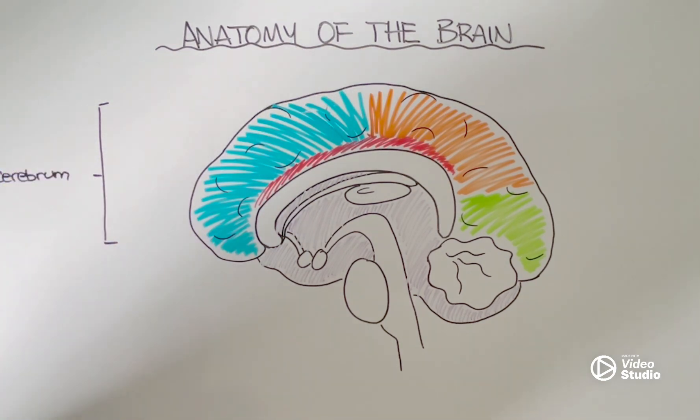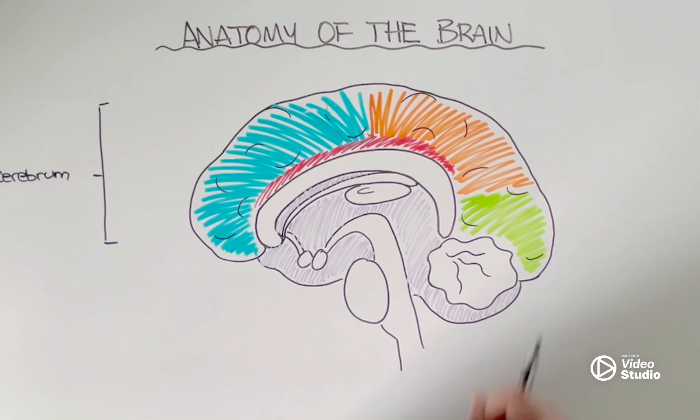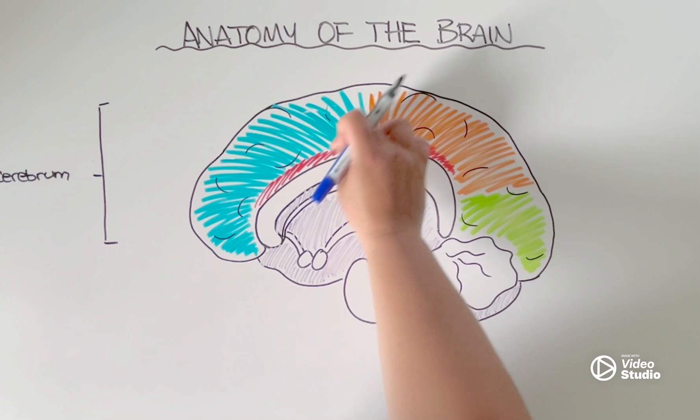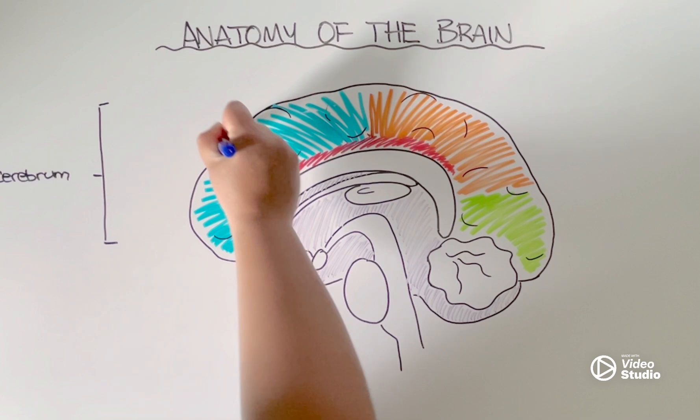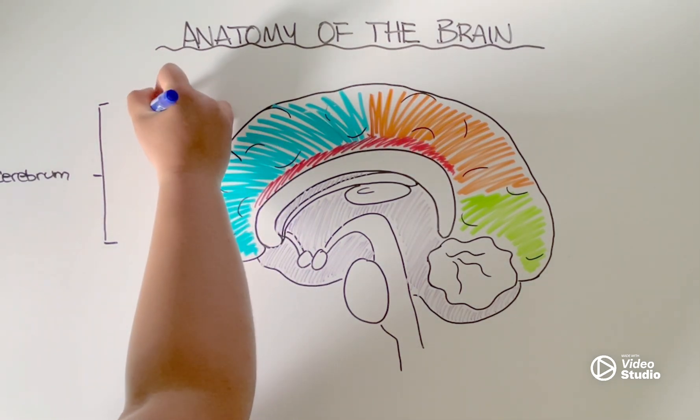Now, the cerebrum has all these folds and gyrifications that act to increase the surface area for impulse transmission, and you'll also notice that it can be divided into four different sections, or lobes, of the cerebrum. The first of which, shown in blue here, is known as the frontal lobe.